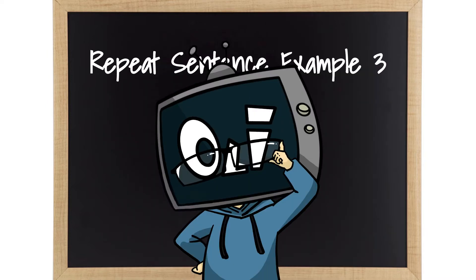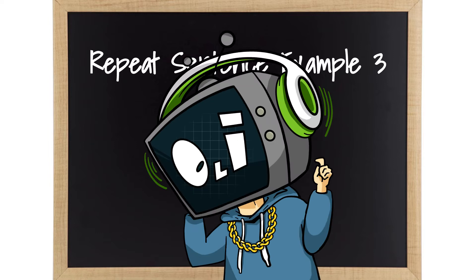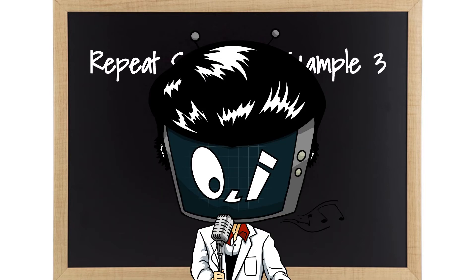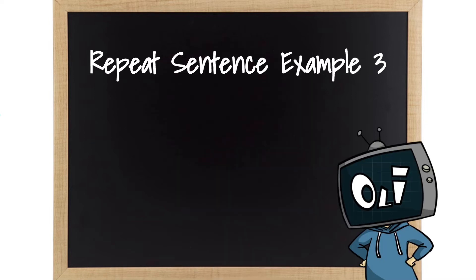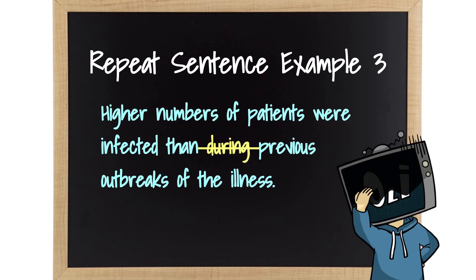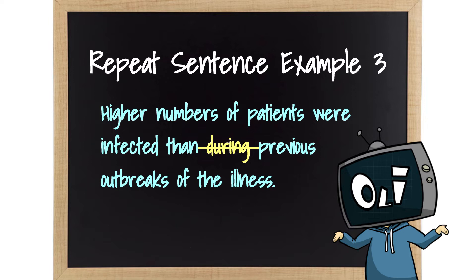This is the third sentence. [Audio plays] Higher numbers of patients were infected than during previous outbreaks of the illness. This one is quite difficult. I omitted 'during' when repeating it myself for the first time, even though it's not a big deal.